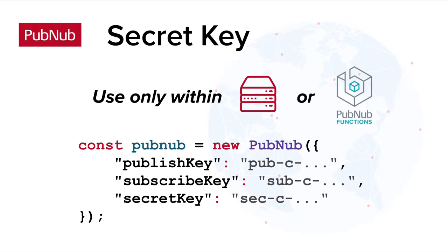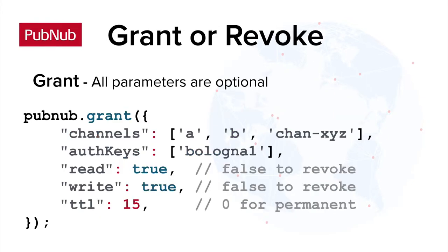Client devices can connect to PubNub without the secret key, but they won't be able to grant — which is recommended. Users that have the secret key can grant and also revoke access for reading and writing of PubNub messages. This can be done for the whole key set, for specific channels or channel groups, or for specific auth keys, which you can think of as a password or auth token. You can issue grants with a time to live in minutes, or you can make them permanent.